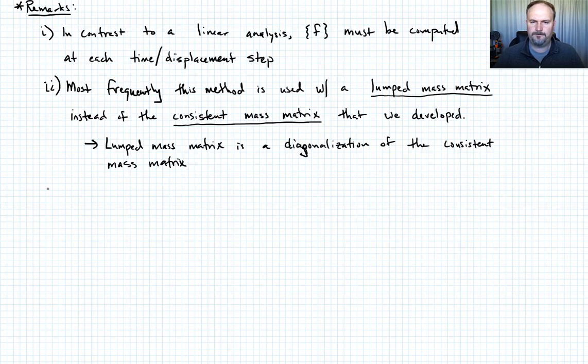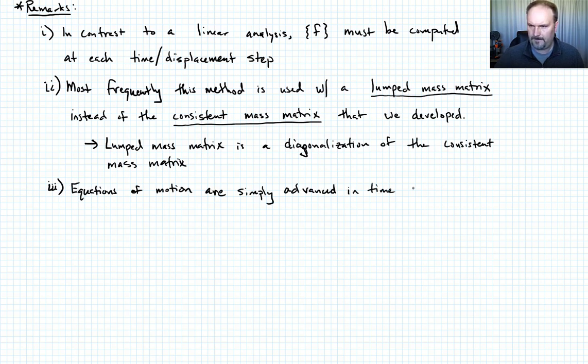Number three. So this solution, the equations of motion are just simply advanced in time. And what this means is that we don't need to have a solution to a system of equations. We don't have to invert the matrix and multiply like we would do for the linear analysis.